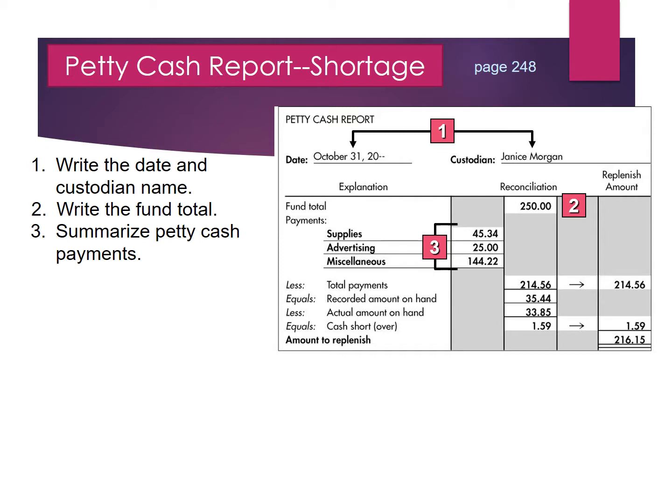Then we will summarize our petty cash payments. On the petty cash report, the payments are a description — they are not the account titles. Underneath the Explanation section of the Payments section, we will write Supplies, Advertising, and Miscellaneous. In the first dollar amount column, we will record the summary of those dollar amounts, then calculate and write the total payments of $214.56, carrying it over to the fourth column.